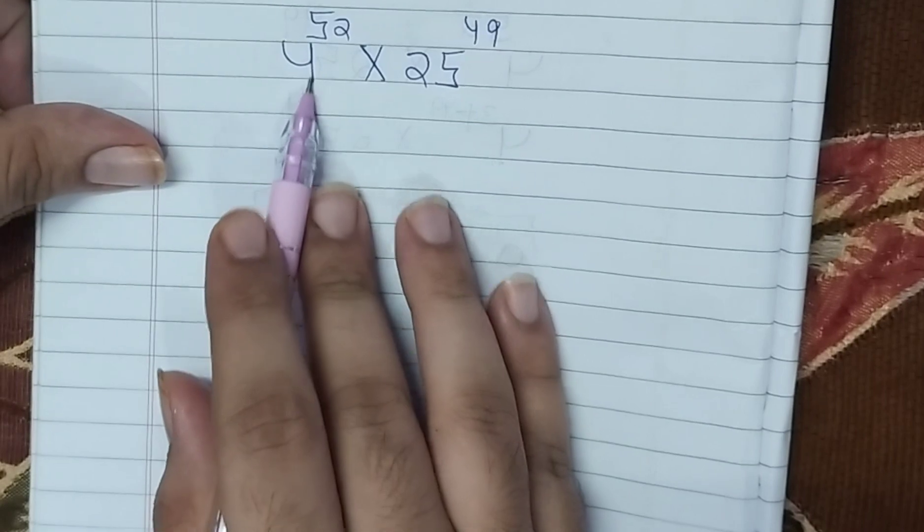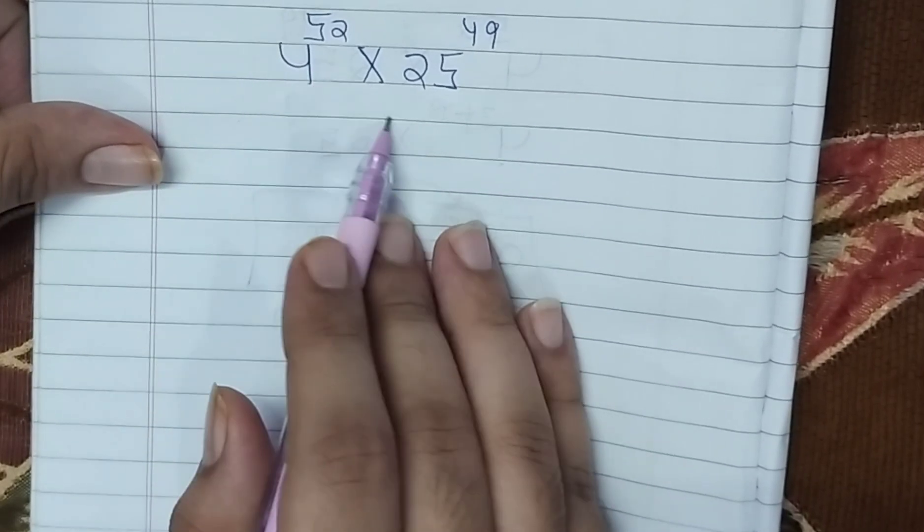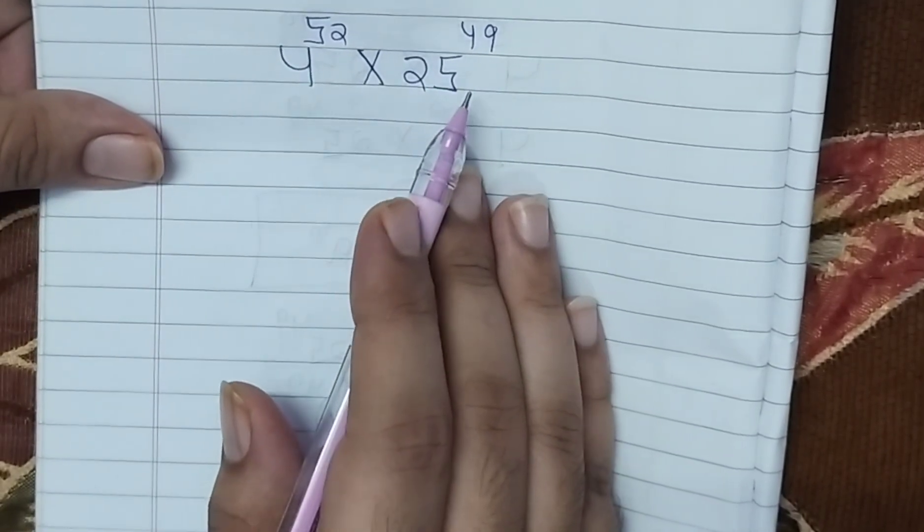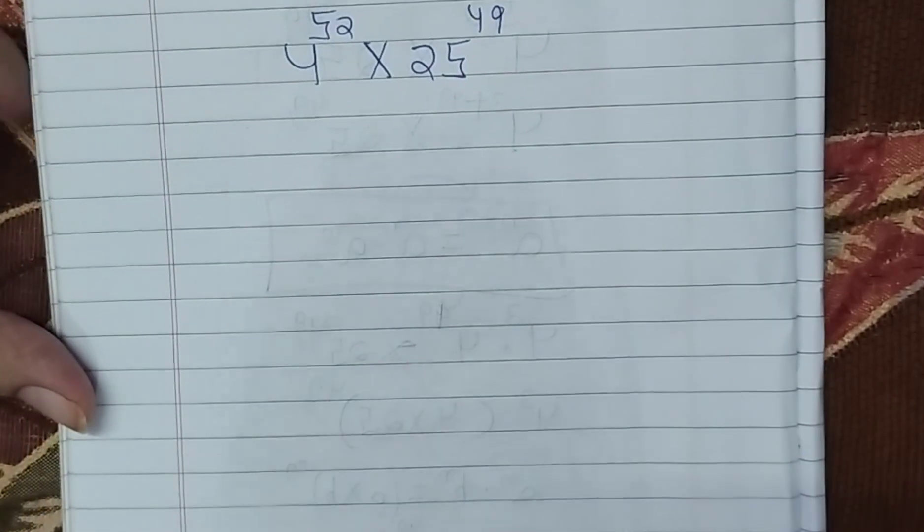Hello friends, today we are going to use this law of indices like 4 to the power 52 multiplied by 25 to the power 14. We need to make this simple solution.